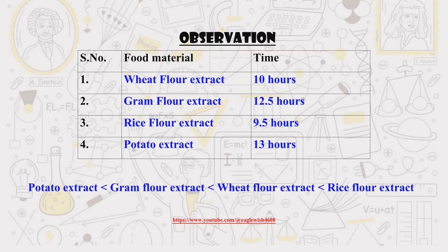Our findings reveal a significant difference in fermentation time between the samples tested. Potato exhibited the slowest fermentation rate whereas rice showed the fastest. The precise fermentation times are summarized in the observation table.